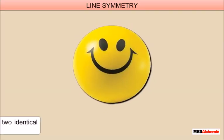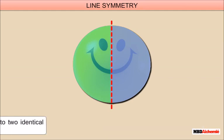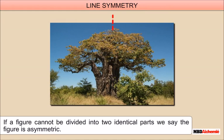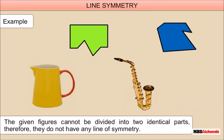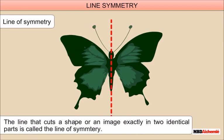Line symmetry: A figure has line symmetry if it can be divided into two identical parts such that each side looks like the other's mirror image. For example, a butterfly. If a figure cannot be divided into two identical parts, we say the figure is asymmetric. Such figures do not have any line of symmetry, hence they are asymmetric. The line that cuts a shape or image exactly into two identical parts is called the line of symmetry.